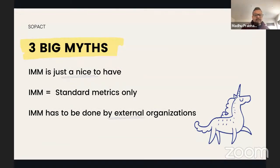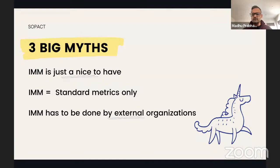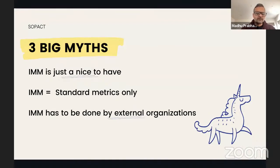We're going to talk through the lens of myths we've seen over the years in this data capacity industry. The first myth is that it's just a nice to have. IMM — Impact Measurement and Management — is the terminology here, and we're using it synonymously with data capacity, meaning the ability to learn about your stakeholders and what impact your projects, programs, and initiatives have on them.